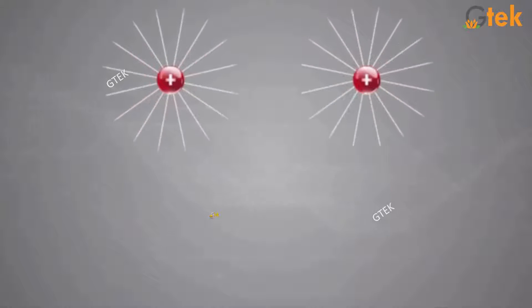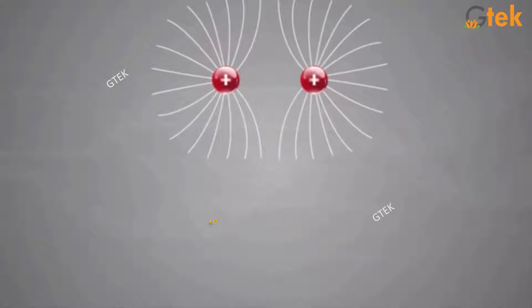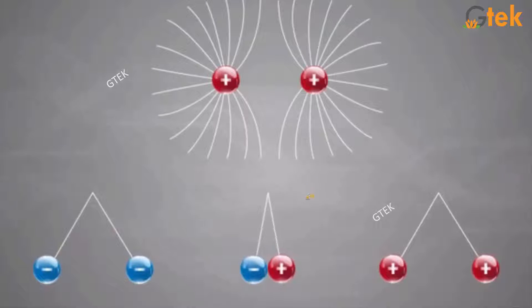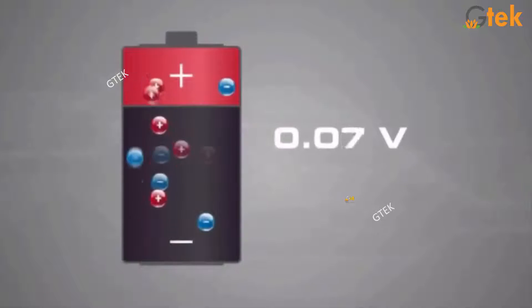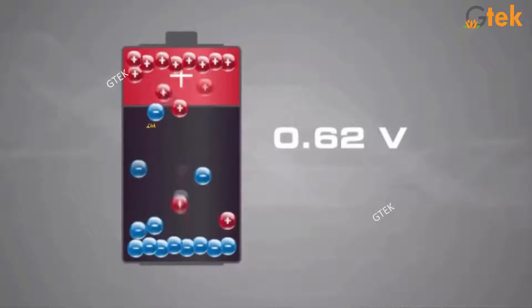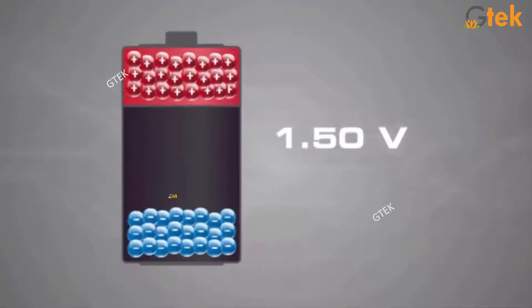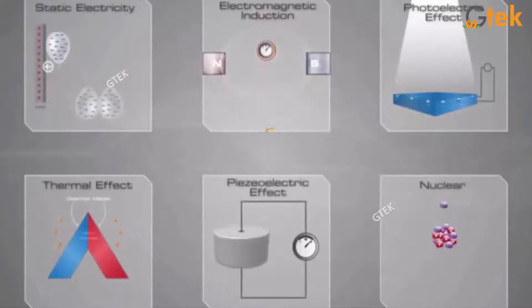The electromotive force, which is called EMF, is the voltage developed by any source of electrical energy such as a battery or dynamo. It is generally defined as the electrical potential for the source in a circuit. A battery, that is a cell, will have positive and negative charges, having 1.50 volts, and its specification is referred to as voltage.